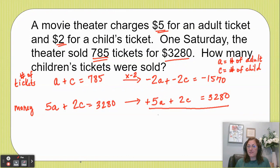Okay, negative 2a plus 5a gives me 3a. Negative 2c plus 2c gives me zero, so these guys are gone. And then we need to add the negative 1570 plus my 3280. I'm doing that in my calculator.